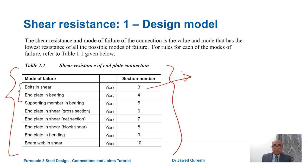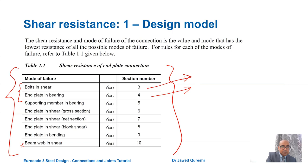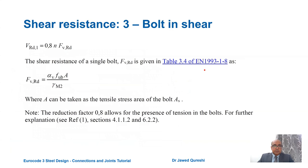Bolt in shear means that when the plate thickness is high, the bolt will shear and fail. End plate bearing is the bearing failure of the plate — this is the most desirable failure mode because we don't want the bolt to fail. The other check is beam web in shear, which is less critical. In addition, we need to check the tying capacity: tension capacity of the bolt, shear capacity of the bolt, and end plate bearing — these three checks are absolutely critical.